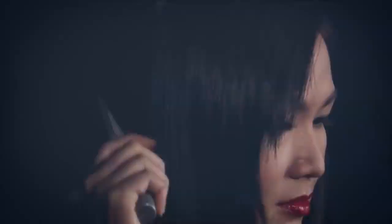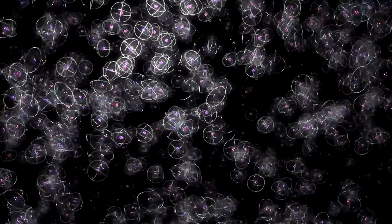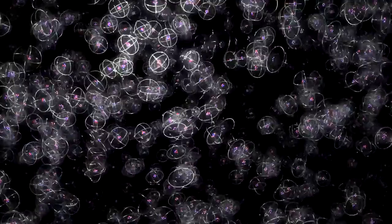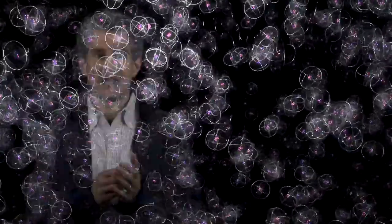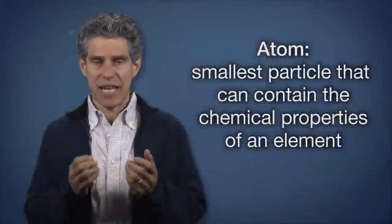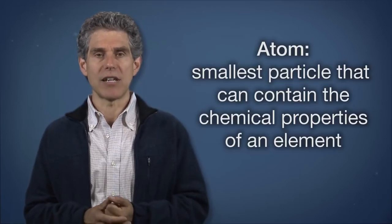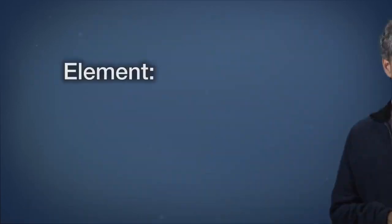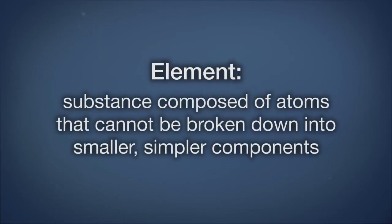All matter is comprised of atoms. Atoms are very small — a single human hair measures a few hundred thousand carbon atoms across. An atom is the smallest particle that can contain the chemical properties of an element. An element is a substance composed of atoms that cannot be broken down into smaller, simpler components.